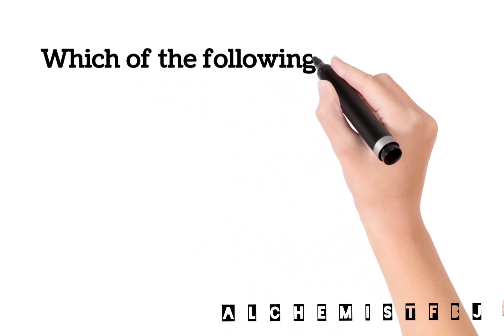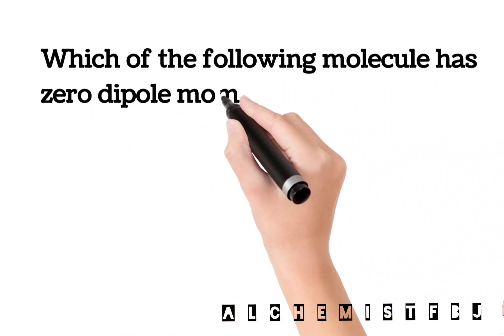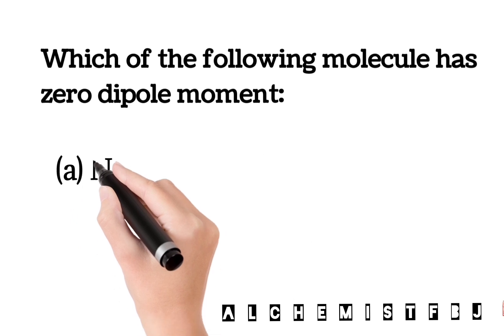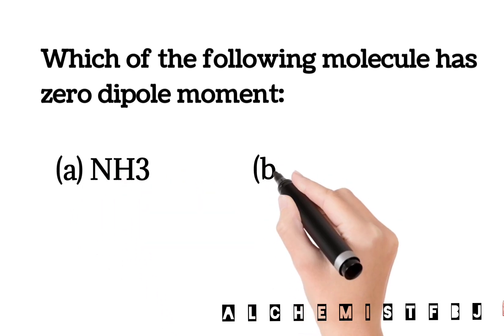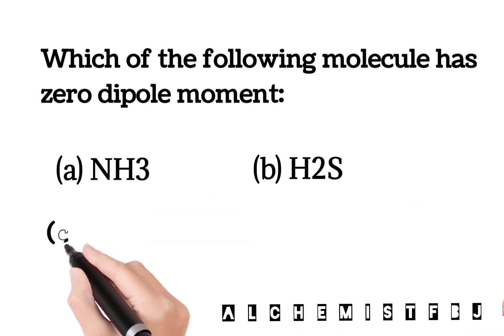Next, which of the following molecule has zero dipole moment? Options: A - NH3, B - H2S, C - H2O, and D - BF3.